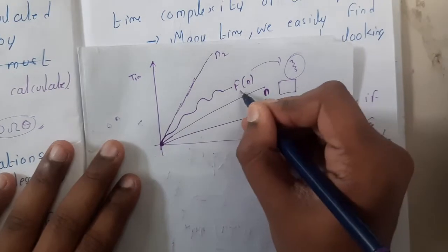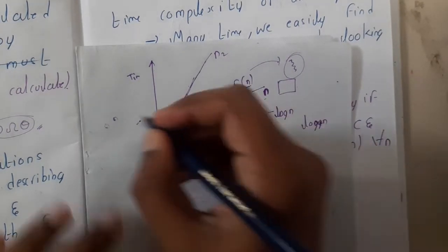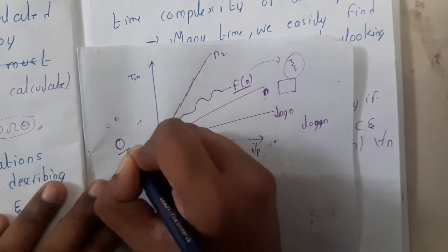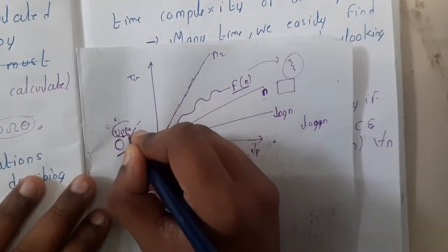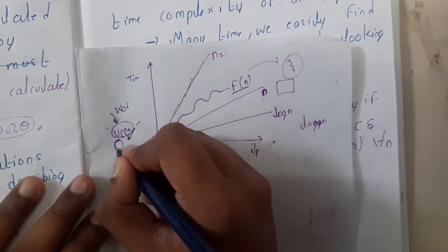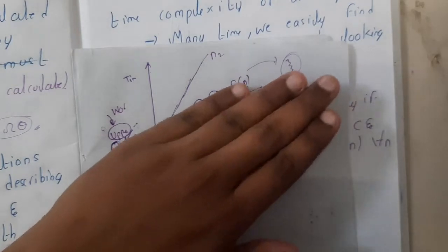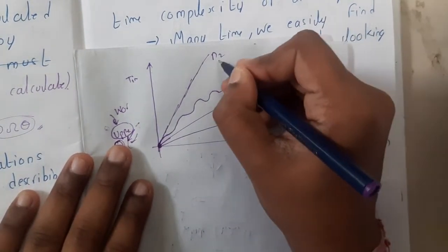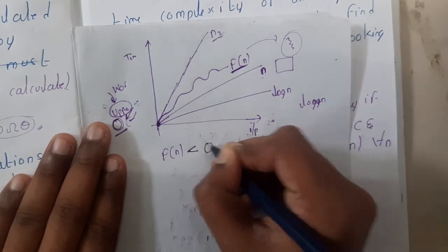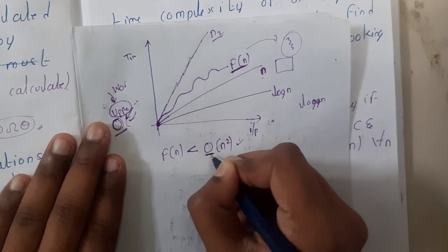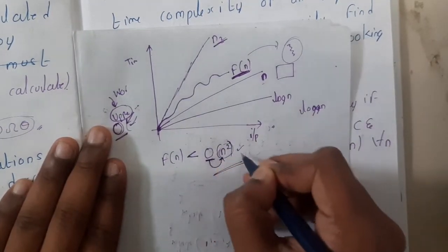Now we have f(n) and we should compare it with reference functions and assign notations. The first type is Big O notation. Big O states the maximum bound, or upper bound — it simply says the worst case. So f(n) is at most n², meaning f(n) is less than or equal to Big O(n²).